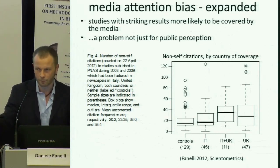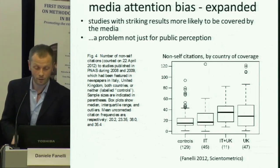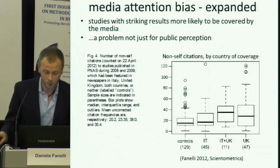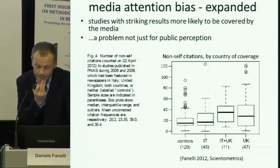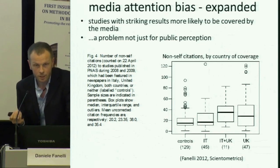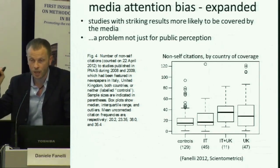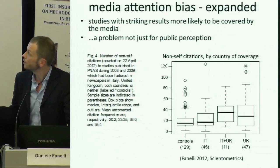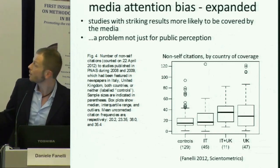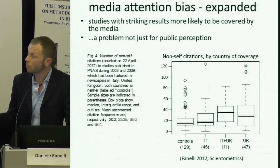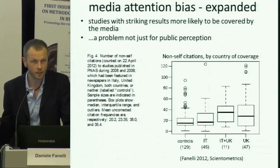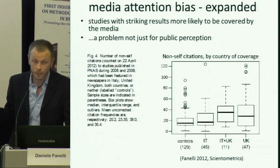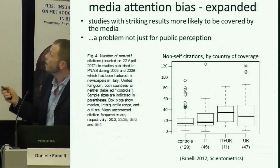Media supposedly only influences public perception, but this is not entirely the case. My own data quite clearly proves that citations — and therefore presumably the attention of researchers — does go into research that makes it into the media more than the rest. This was a study done on papers published in PNAS, with a control group of papers never reported in at least British or Italian newspapers. The ones appearing in Italian, UK, or both media showed dramatically higher non-self citations, telling you that media attention bias is literally likely to feed back any potential bias in the research field back into the research itself.